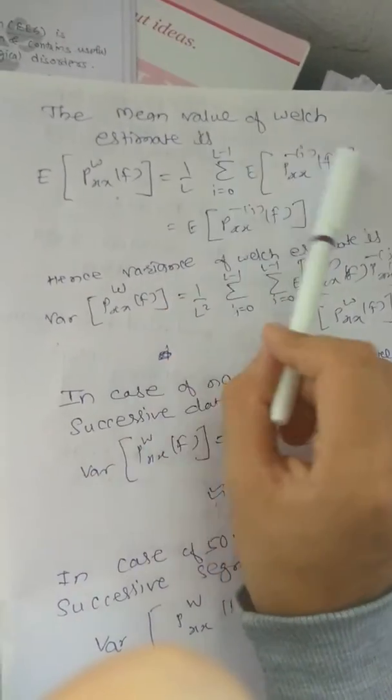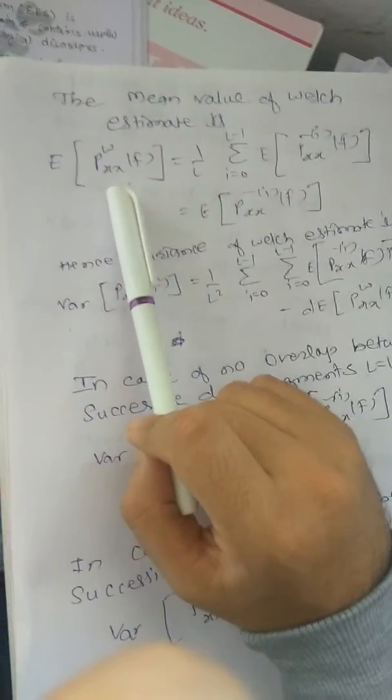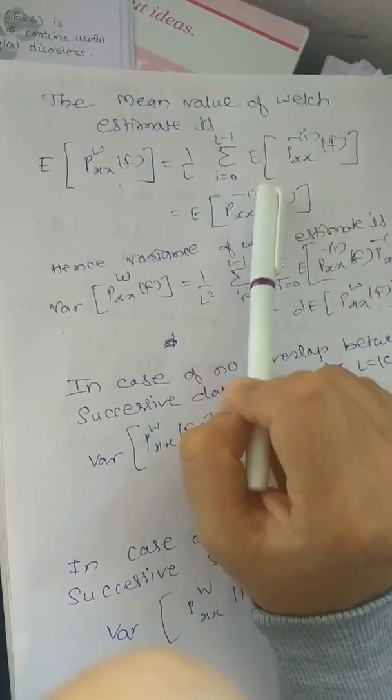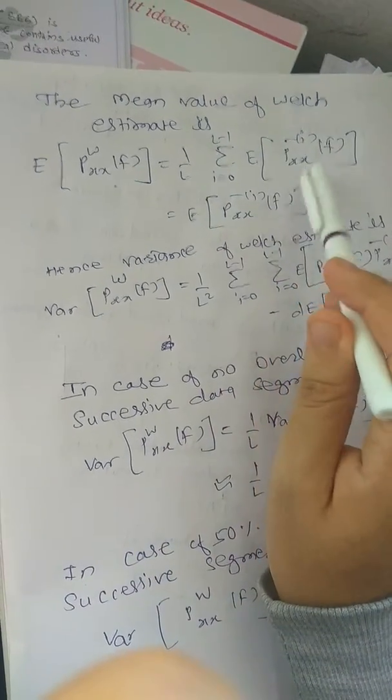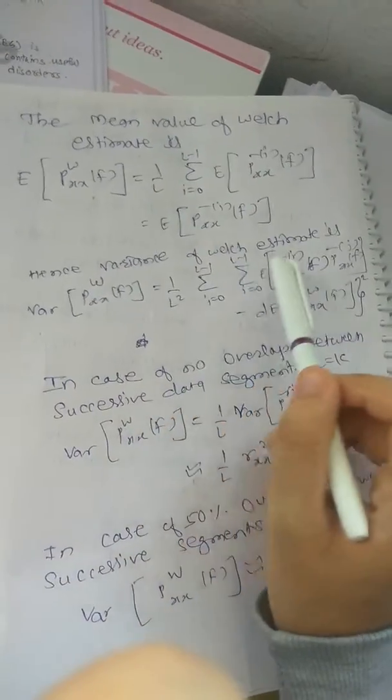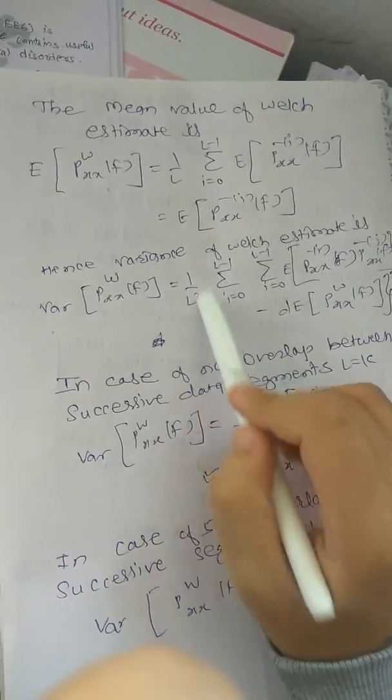The mean value of Welch estimation is: 1/L summation 0 to L-1 equals P_x_i(f) or E[x_i(f)]. Hence, the variance of the Welch estimation is 1/L²...